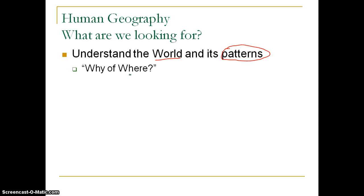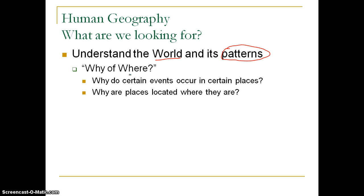In geography, space is incredibly important, and we'll be talking more about developing a spatial perspective later on. Why do certain events occur in certain places? These could be either human events — whether we're talking about war, famine, economic prosperity, certain types of elections, really any kind of human event — or we could talk about physical events like earthquakes, tsunamis, or hurricanes. Those are going to be elements of physical geography, not human geography. But in human geography, we look at how the physical environment impacts the human environment and how humans respond to that.